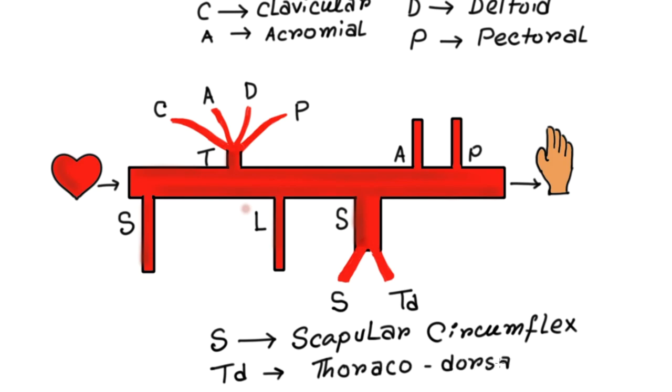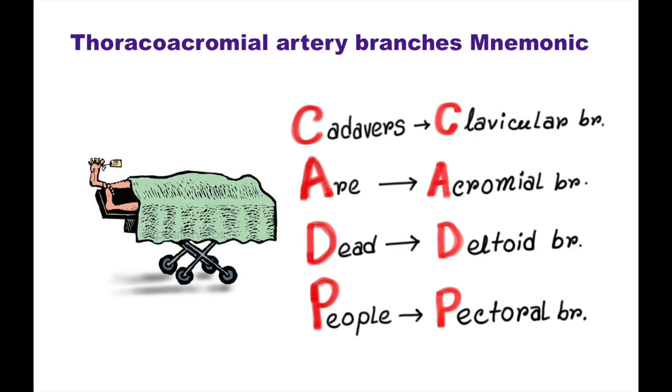Now here is the mnemonic for thoracoacromial artery branches. This is cadavers are dead people. Now follow the red letters: C for clavicular artery, A for acromial artery, D for deltoid artery, and P for pectoral artery.